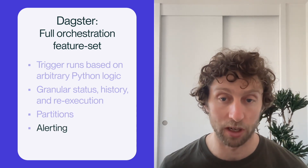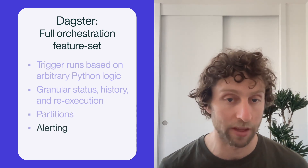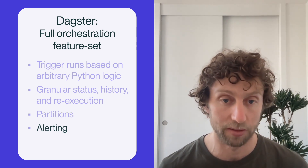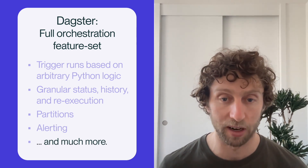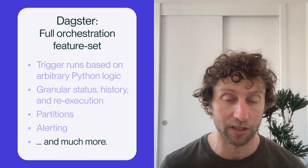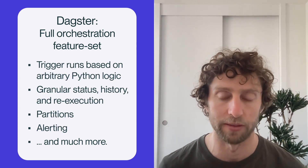Dagster also offers general purpose alerting — you can run arbitrary Python logic whenever one of your runs fails. This is actually only a small sample of Dagster's general purpose orchestration functionality. Last of all, Dagster is open source. We offer a cloud product where we deploy Dagster for you and offer extra features for teams, but fundamentally you're not locked in. If we change our pricing in a way that you believe is unfair, you always have the option to take your Dagster pipelines and deploy them on your own using the open source project.